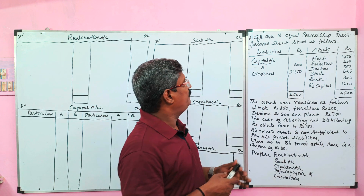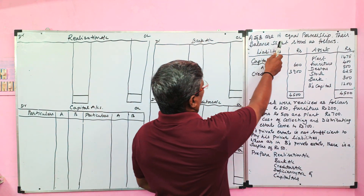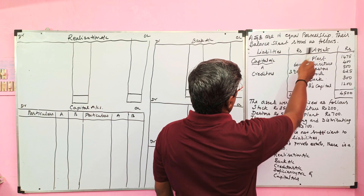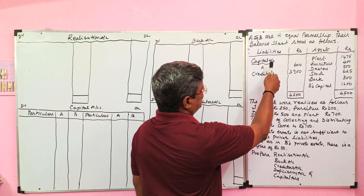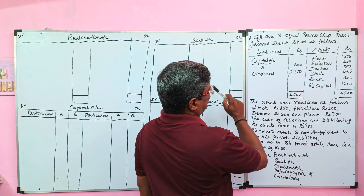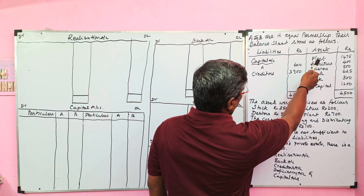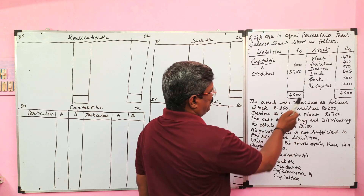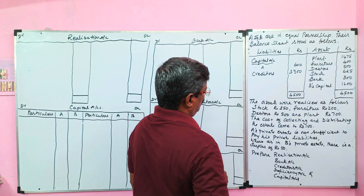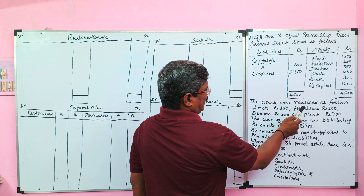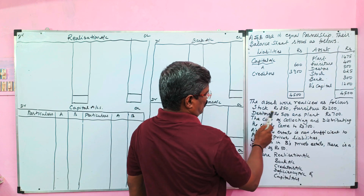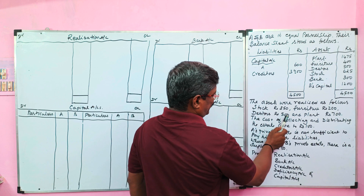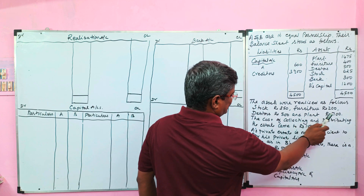A and B are equal partners. Their balance sheet shows on the liability side: A's capital and creditor. On the asset side: plant, furniture, debtor, stock, bank, and B's capital — B is overdrawn. The assets were realized as follows: stock ₹350, furniture ₹200, debtor ₹500, plant ₹700.